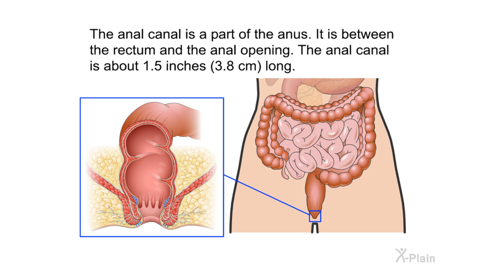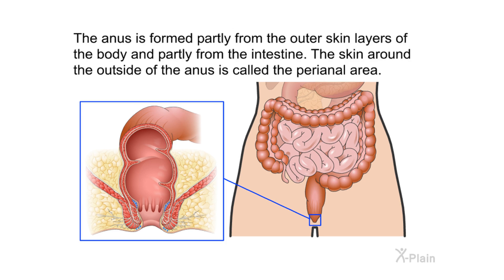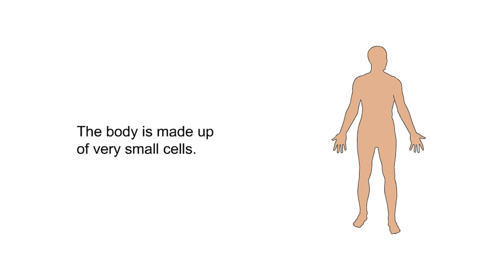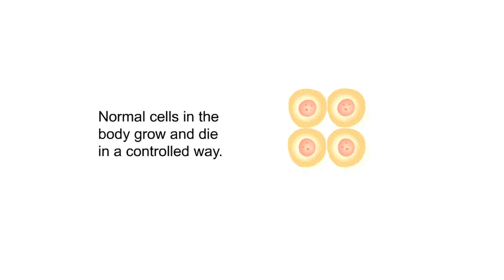The anal canal is a part of the anus, located between the rectum and the anal opening. The anal canal is about one and a half inches, or 3.8 centimeters, long. The anus is formed partly from the outer skin layers of the body and partly from the intestine. The skin around the outside of the anus is called the perianal area.